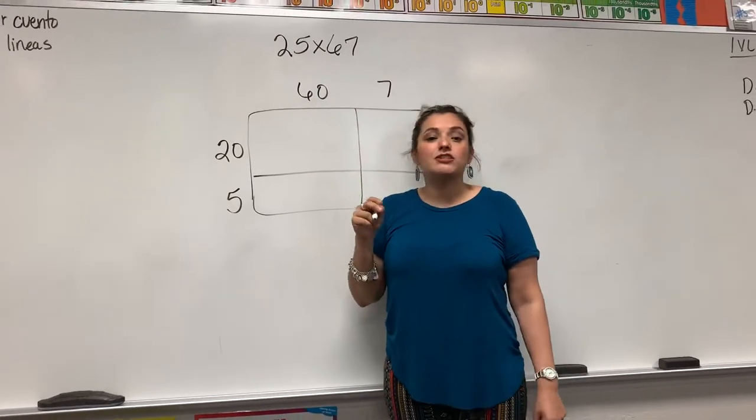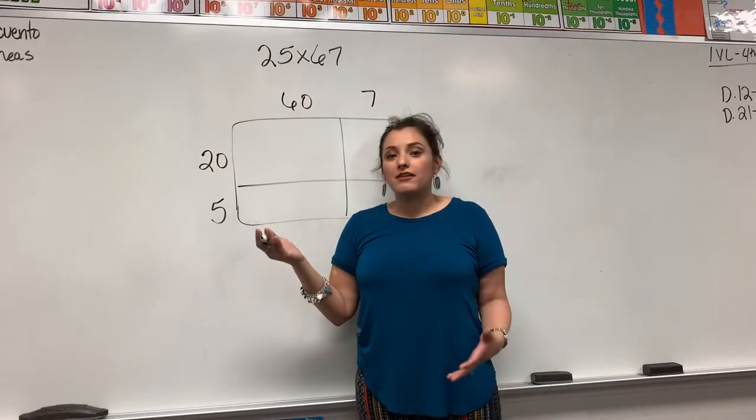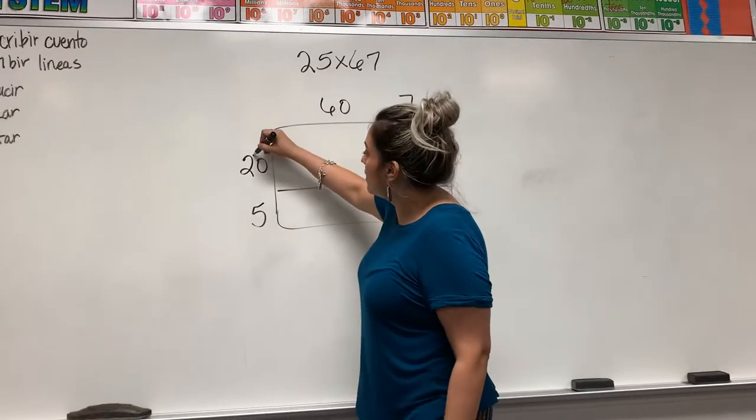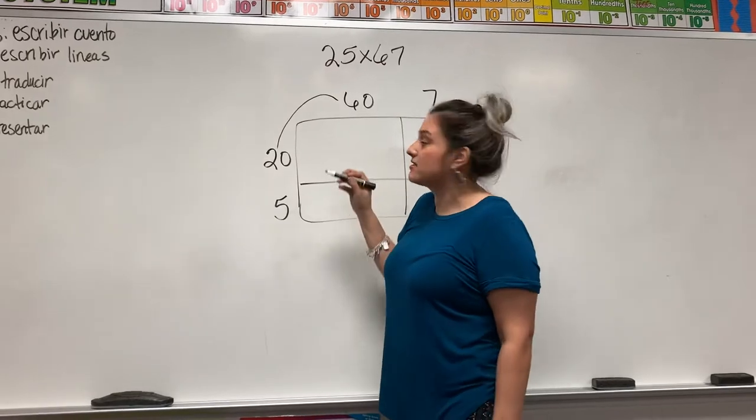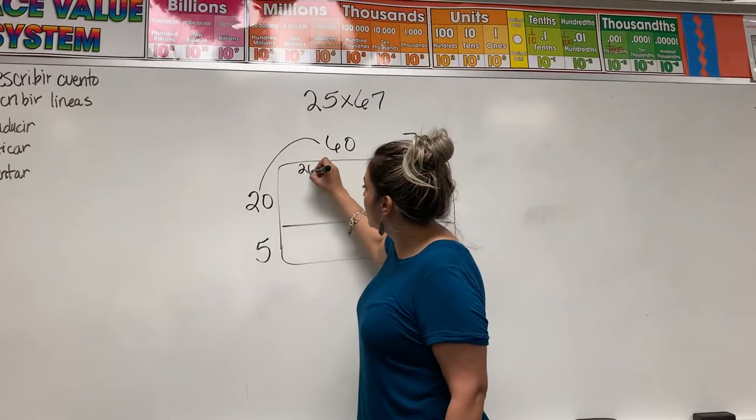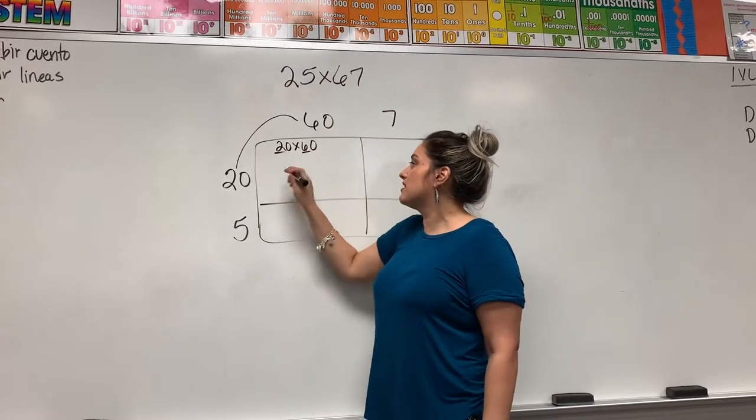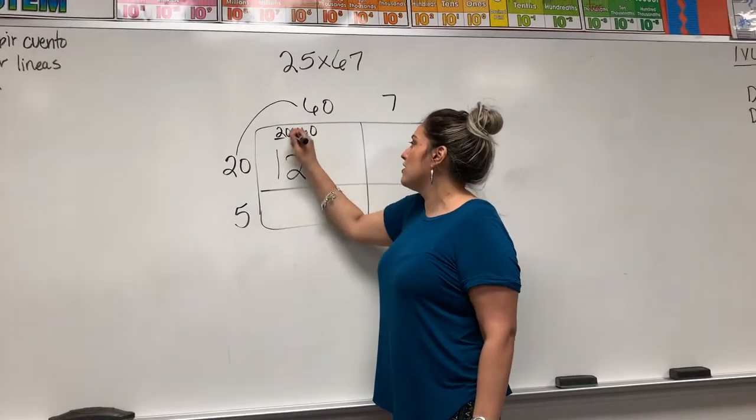The second step is to distribute the numbers and find the partial products. Okay, so here we're distributing the 20 and the 60 for this quadrant here. So 20 times 60. When we multiply 2 times 6, we get 12 and you add your zeros.